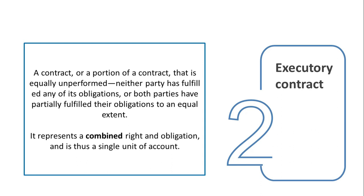If in the assessment of the entity the terms of the exchange are currently favorable, the entire executory contract is recognized as an asset; otherwise, it is recognized as a liability. A common example of an executory contract is a lease. The rights and obligations are interdependent and cannot be separated. A lessor's right to collect rent from the lessee is interdependent on the lessor providing rental space. Similarly, the lessee's right to occupy the rental space is interdependent on the lessee's obligation to pay rent.